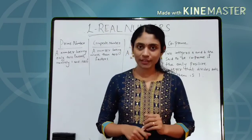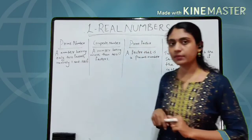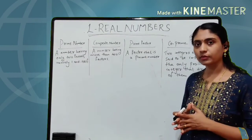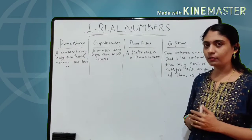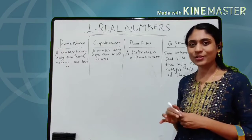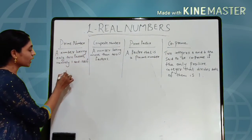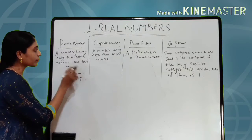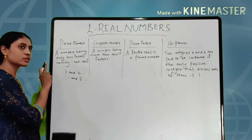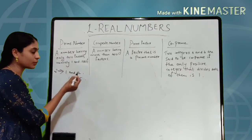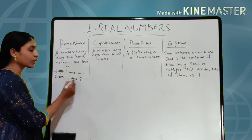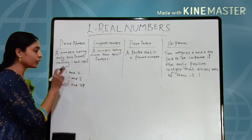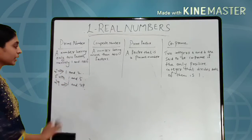Before going to the topic of fundamental theorem of arithmetic, you must know these four terms: prime number, composite number, prime factor, and co-prime. A prime number is a number having only 2 factors: 1 and itself. For example, 2 is a prime number — its factors are 1 and 2. And 5 is a prime number — its factors are 1 and 5.